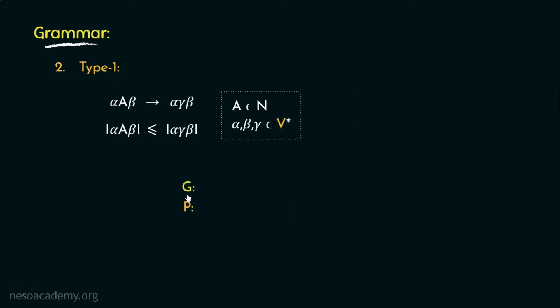For an instance, consider the grammar having the production rule, capital A small c can be rewritten as capital B followed by small b c c. Observe, the left hand side of the production has two elements, whereas the right hand side has four.